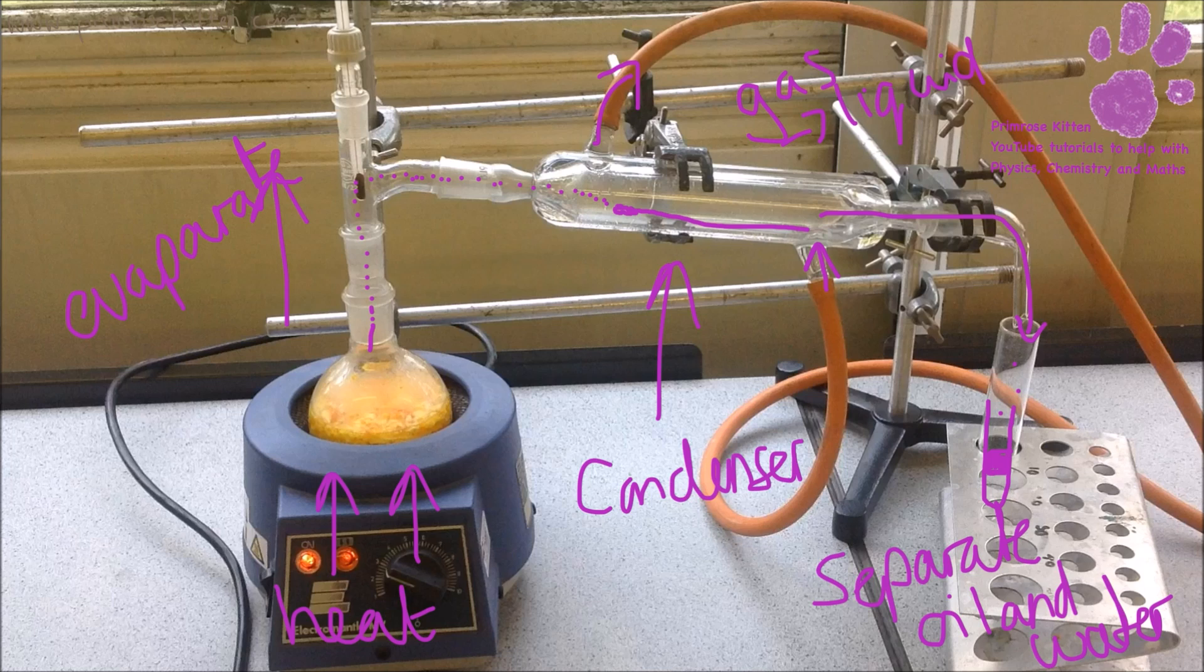Because oil and water don't mix, you can just take the oil off the top and you've got your oil extracted from the orange peel. This is also really nice to do with lavender.